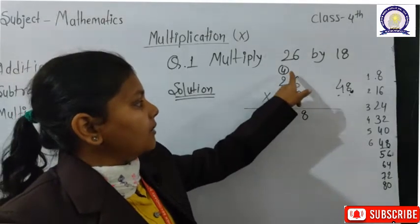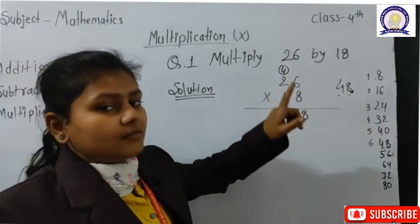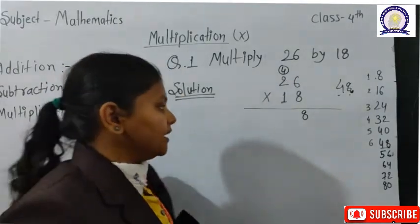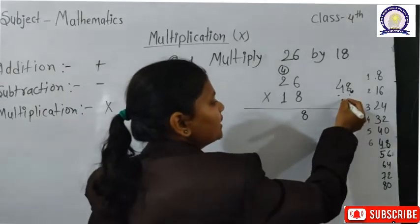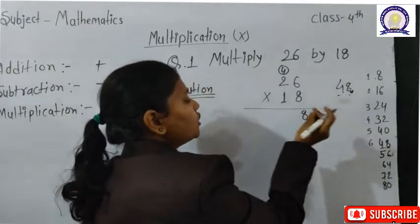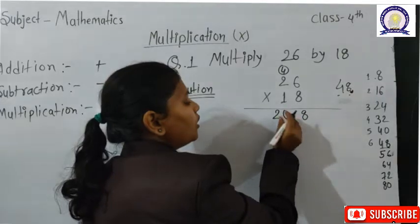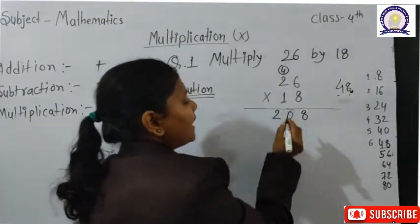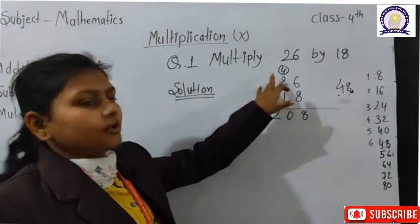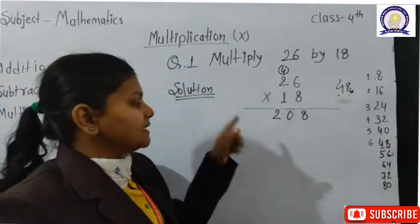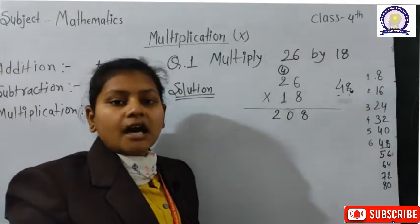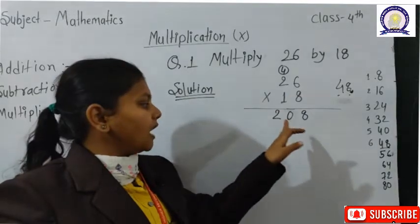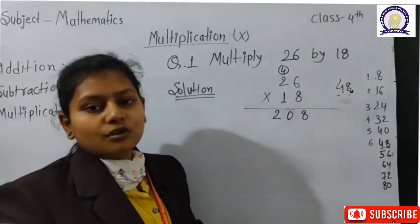Just as in addition, when we get 48 — how many digits are in 48? Two digits. So we cannot fit both digits in the box. The right digit goes in the box, and the left digit becomes a carry.